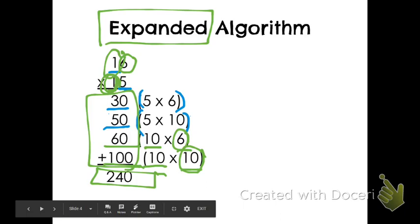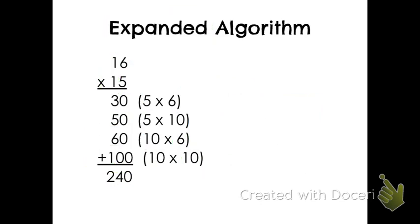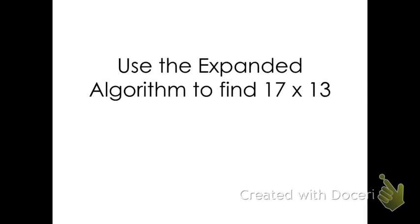So really, the box diagram is just a different visual of how to write everything that you wrote here. I would like for you, in your notes, to go ahead and write down 17 times 13. We're going to use the expanded algorithm to solve this problem.